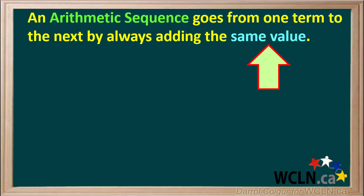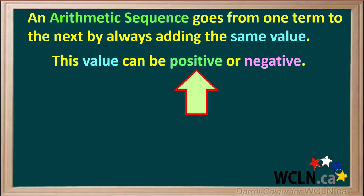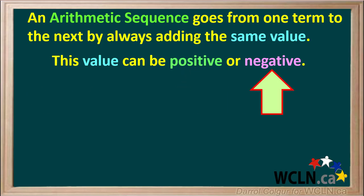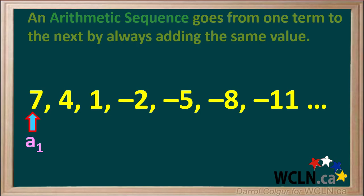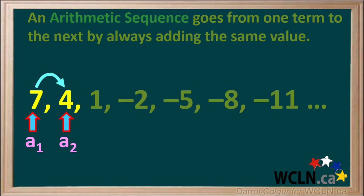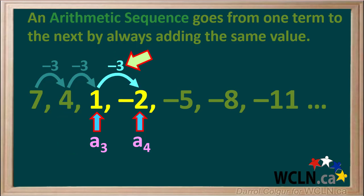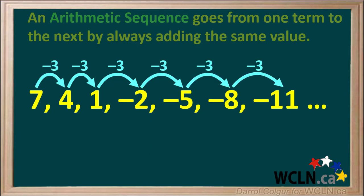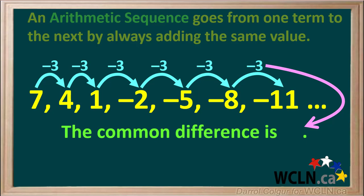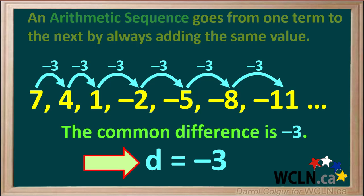Remember, an arithmetic sequence goes from one term to the next by always adding the same value. This value can either be positive or negative. Let's have a look at this sequence where the first term a1 is equal to 7. To go from the first term (7) to the second term (4), we have to add negative 3. 7 plus negative 3 is equal to 4. Going from term 2 (4) to term 3 (1), we also add negative 3. Adding negative 3 to 1 gives us negative 2, the value for term 4, and adding negative 3 to each number gives the next one. So the common difference in this sequence is negative 3 — d equals negative 3.